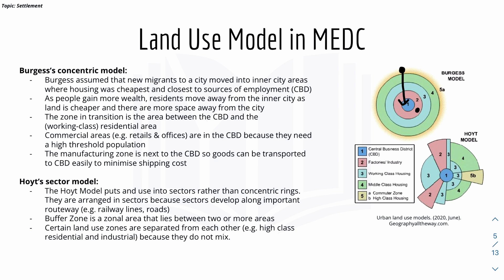There is also another land-use model in MEDCs called the Hoyt Sector Model, which looks quite different to the Burgess Concentric Model. The Hoyt Model arranges services into sectors rather than concentric rings. The CBD is still at the center, but factories and industries are located in sectors, alongside working-class housing, middle-class housing, and high-class housing in their own sectors.